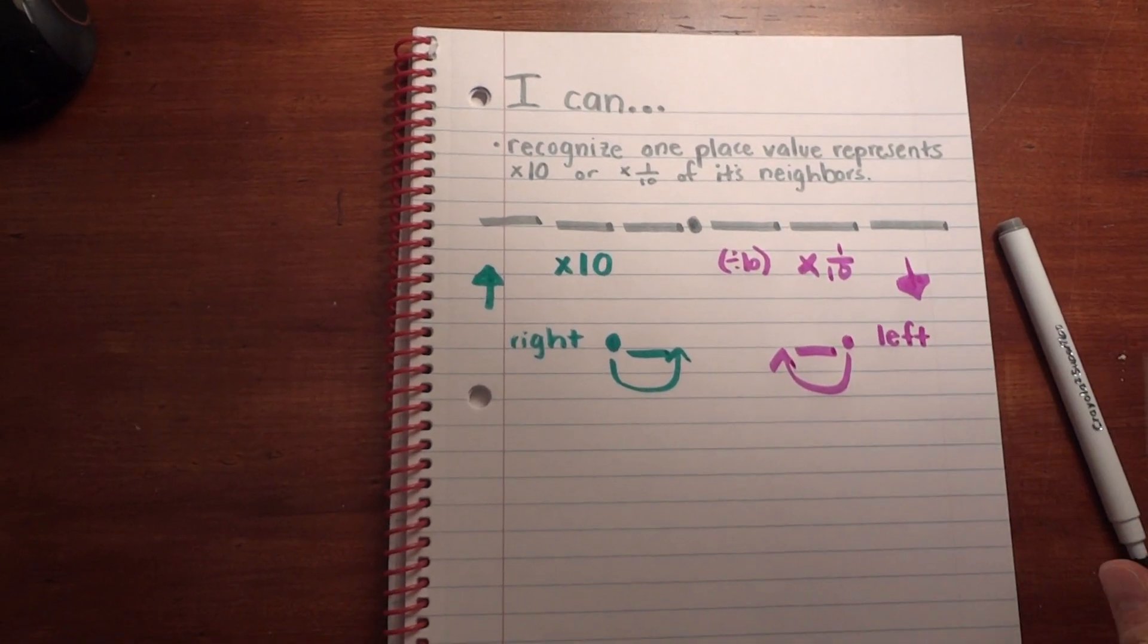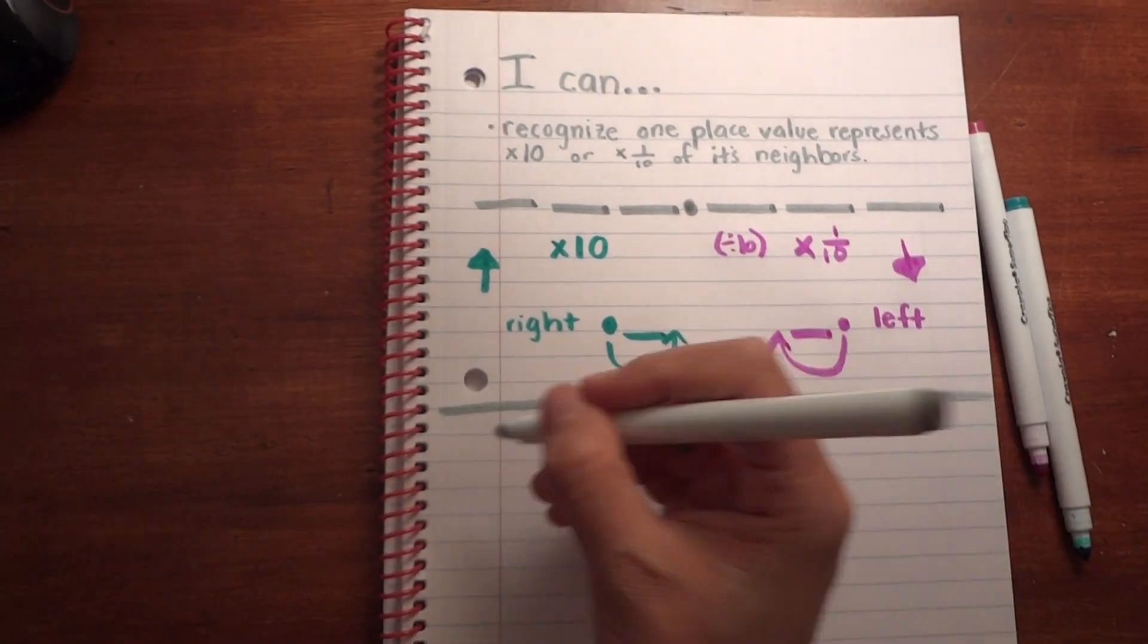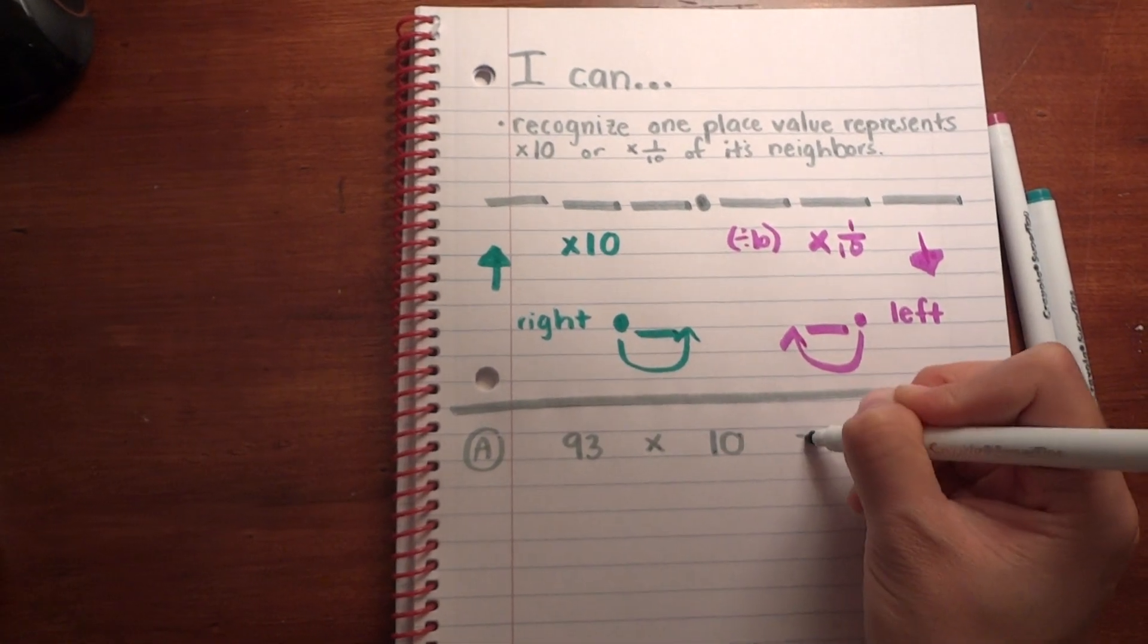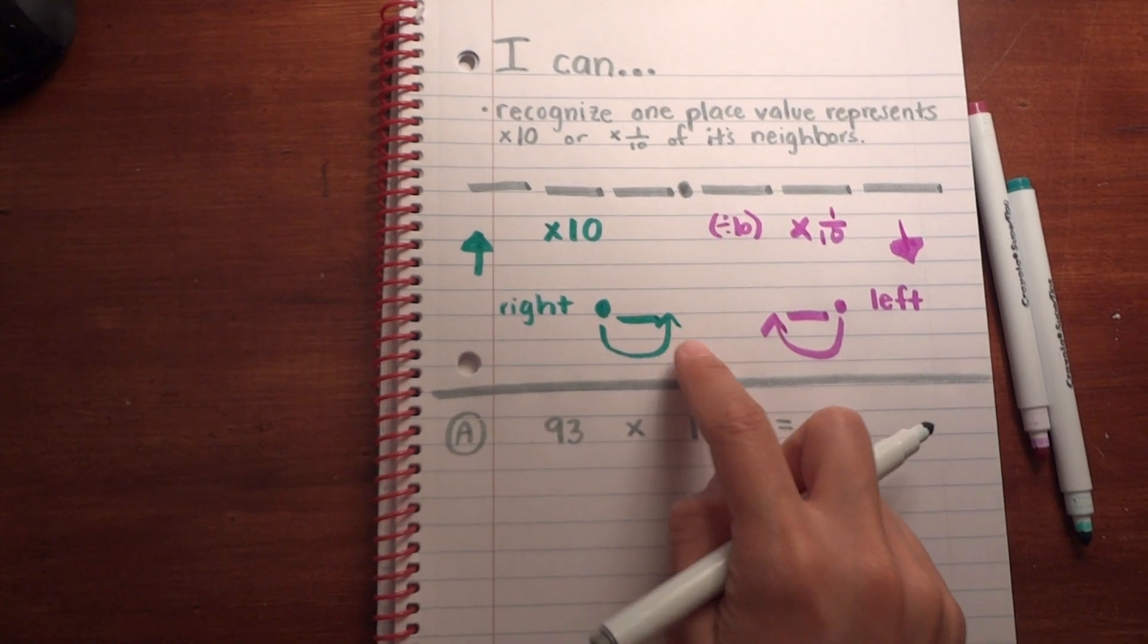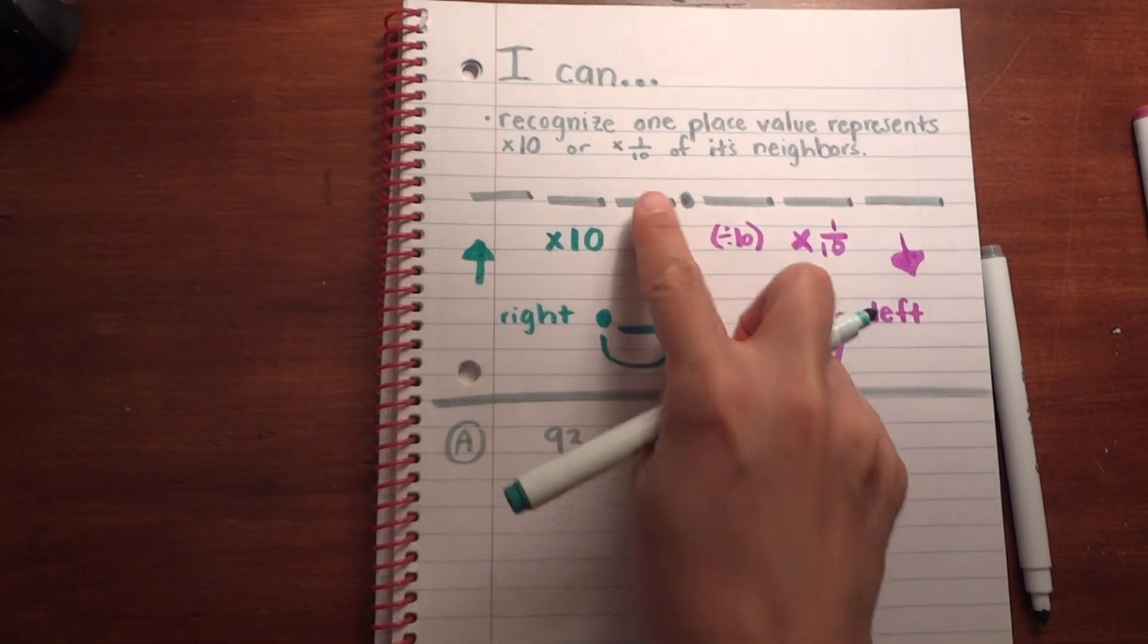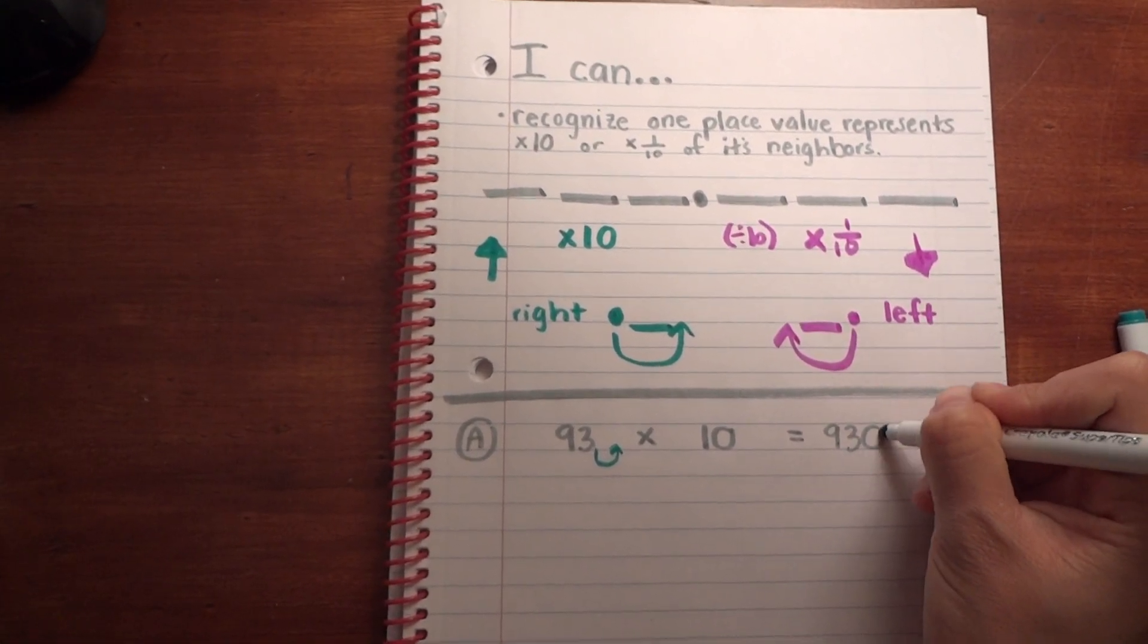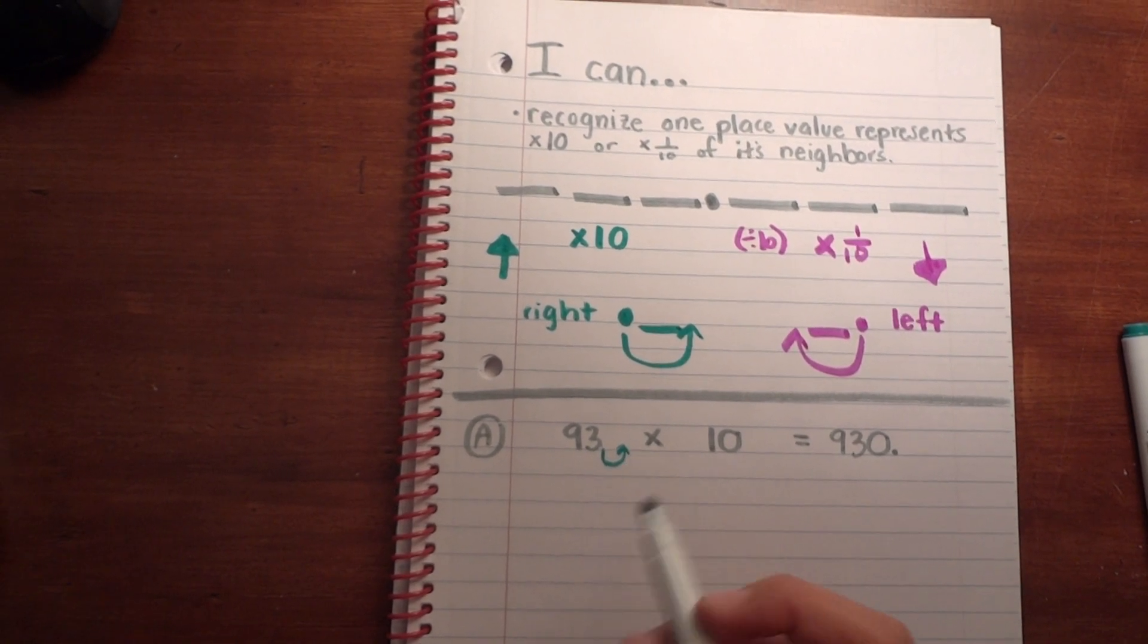Let's put this into practice. Example A: what if we have the number 93 and we're multiplying that by 10? First, check what you're doing—you're increasing its value 10 times, moving the decimal place over to the right one time. 93 times 10 equals 930, moving that place value over once.